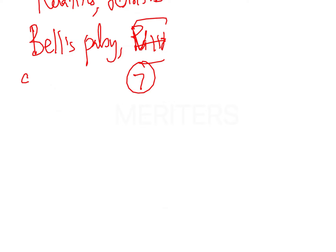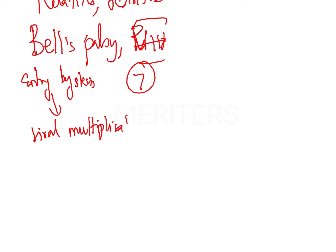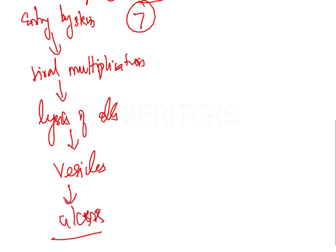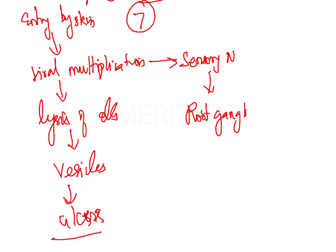What is the pathogenesis? First, entry by skin or mucous membrane, then viral multiplication, which causes lysis of cells, leading to vesicles and ulcer formation. Near this viral multiplication, sensory nerves are affected at the root ganglia. If you understand this flowchart, you will remember herpetic lesions for life. There will be a latency period, and on reactivation it causes ulcers.